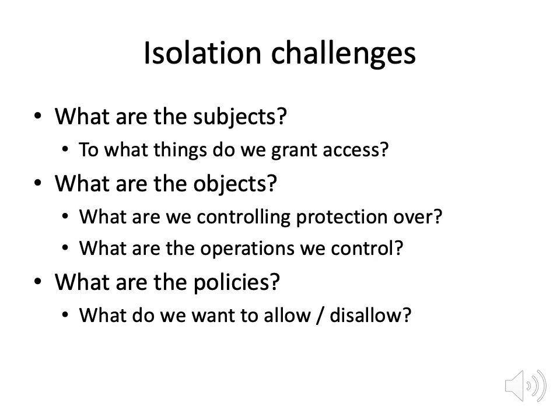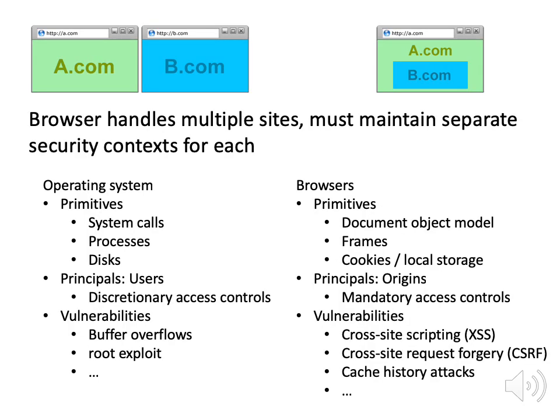We are security systems people and we want to build a more secure browser. The thing we want to provide is isolation — we want to isolate components from each other so they can't interact unless we say they can. We need to figure out what are the entities: the subjects of access control. In a normal operating system, users or the programs running are the subjects. The objects in an OS are things like files and system calls. For a browser, the objects are portions of the DOM tree, the ability to communicate over the network, and the ability to communicate with other web pages. The hardest part is the policies — what should we allow and what should we disallow.